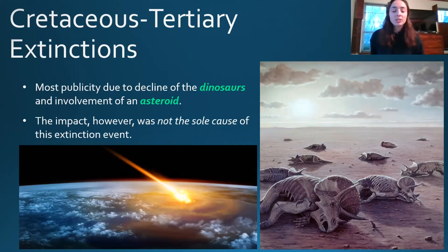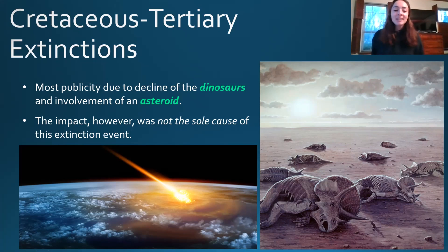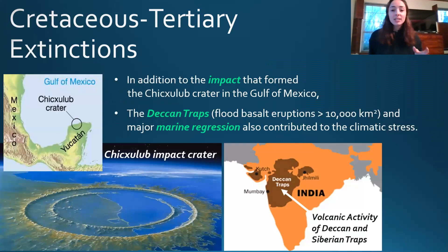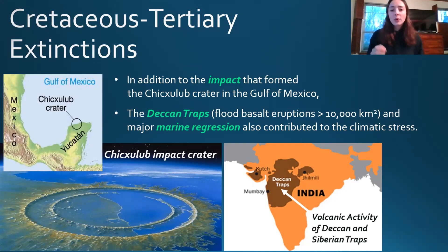The next mass extinction is the Cretaceous-Tertiary extinction, which received the most publicity because of the decline of dinosaurs — I say decline rather than extinction because birds are dinosaurs, so they're not extinct. The other reason it receives publicity is the involvement of an asteroid. The impact, however, was not the only cause. In addition to the impact that formed the Chicxulub crater in the Gulf of Mexico, shown in the images on the bottom left, the Deccan Traps — flood basalt eruptions located in modern-day India — as well as major marine regression also contributed to the climatic stresses. The flood basalt eruptions spanned an area over 10,000 square kilometers.